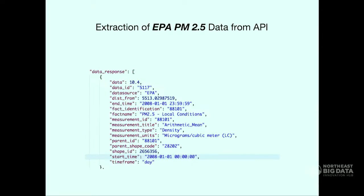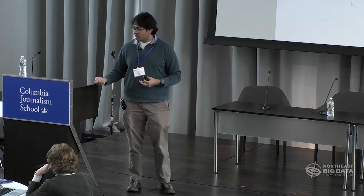What you get back is all that data as rows corresponding to the queries you ran. For example, for EPA PM2.5, you can see a parent shape code — that's the data you put in — as well as the raw values. You also get metadata such as how the measurement was made. From NOAA you get the same type of information, and from the census you get the median family income for that zip code, measured in 2013 inflation-adjusted dollars. We're trying to give you as much data as possible in an agnostic way so you can later process it in whatever way you need.